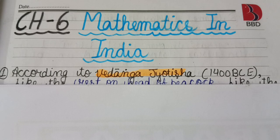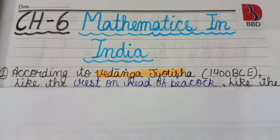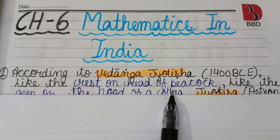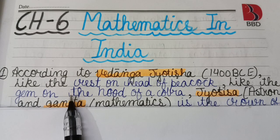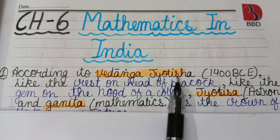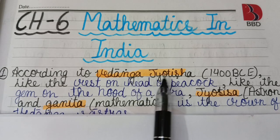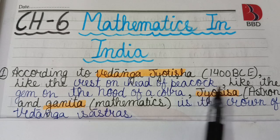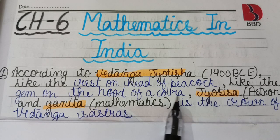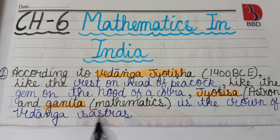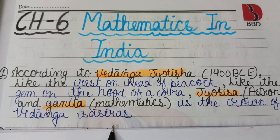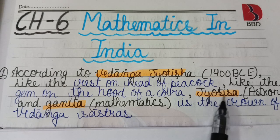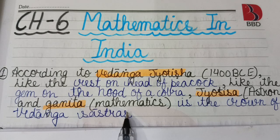Students from different countries came to India to learn astronomy and mathematics. According to Vedang Jyotish, dating to around 400 BCE, which is an ancient text on astrology, it is stated that like the crest on the head of the peacock and like the gem on the hood of the cobra, Jyotish (astronomy) and Ganit (mathematics) are the crown of Vedic Shastras — the top of all Shastras.